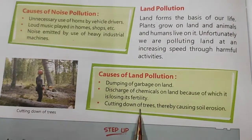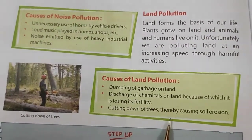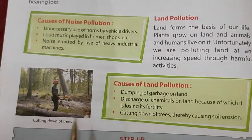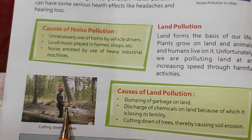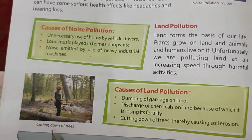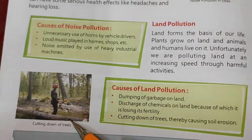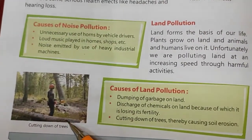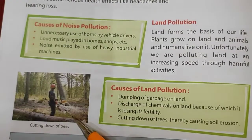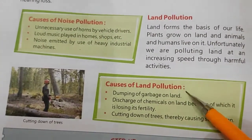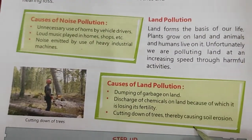Number 3 is cutting down of trees, thereby causing soil erosion. In this picture, you can see a man cutting a tree. When we cut down trees, the soil over there loses its fertility and it leads to soil erosion. All these activities should be stopped.